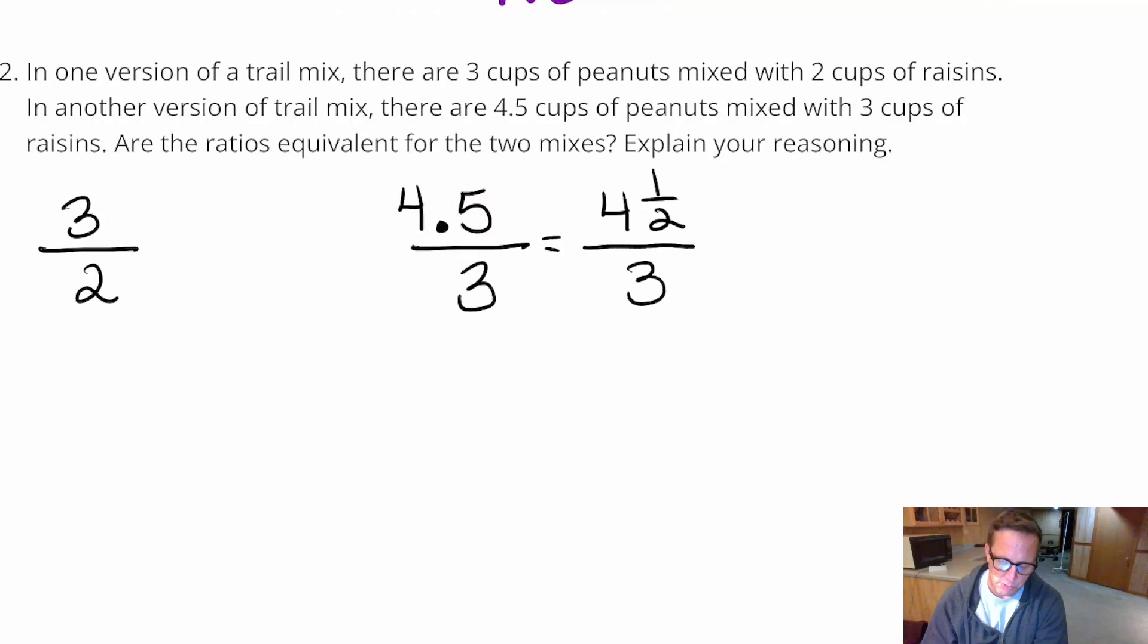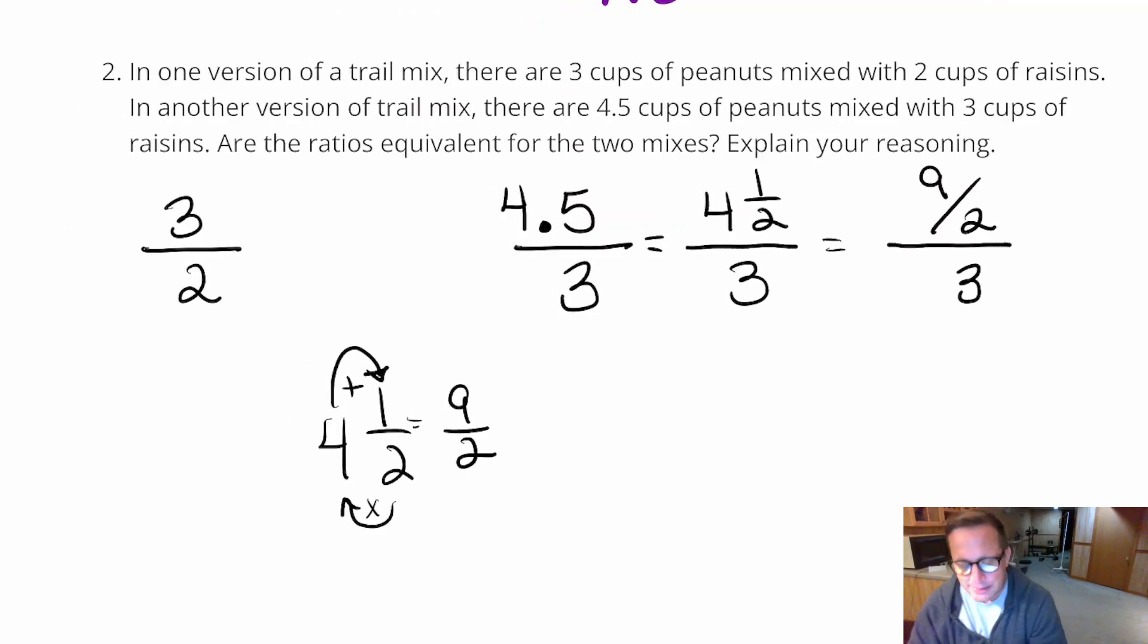Now what I have is I have a complex fraction. Now what I'm going to do is I'm going to change four and a half to an improper fraction. Four and a half, change to improper. So four times two, two times four is eight. Plus one makes nine. So that's nine halves right there. So we've got nine halves over three. Again, that does not look like three over two, right? But we're not done with it. It's still in complex form.